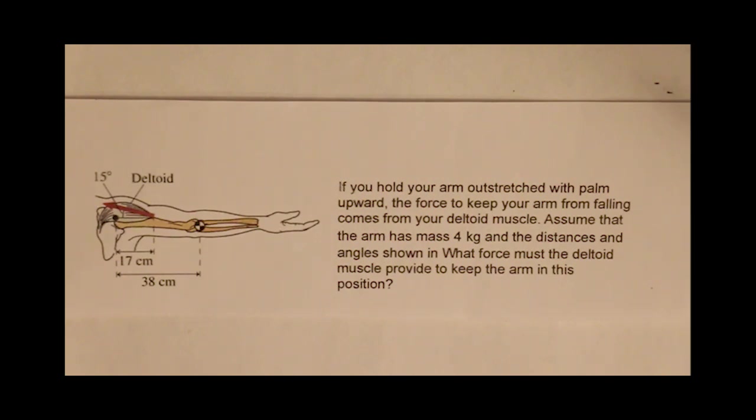If you hold your arm outstretched with palm upward, the force to keep your arm from falling comes from your deltoid muscle. Assume that the arm has a mass of four kilograms and the distances and angles shown. What force must the deltoid muscle provide?